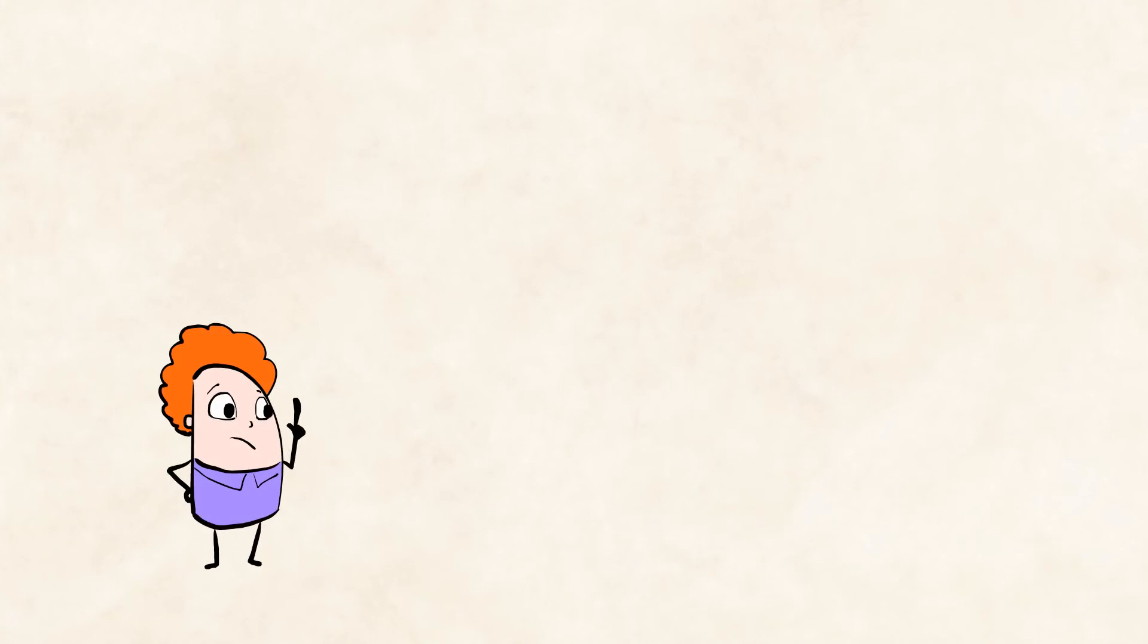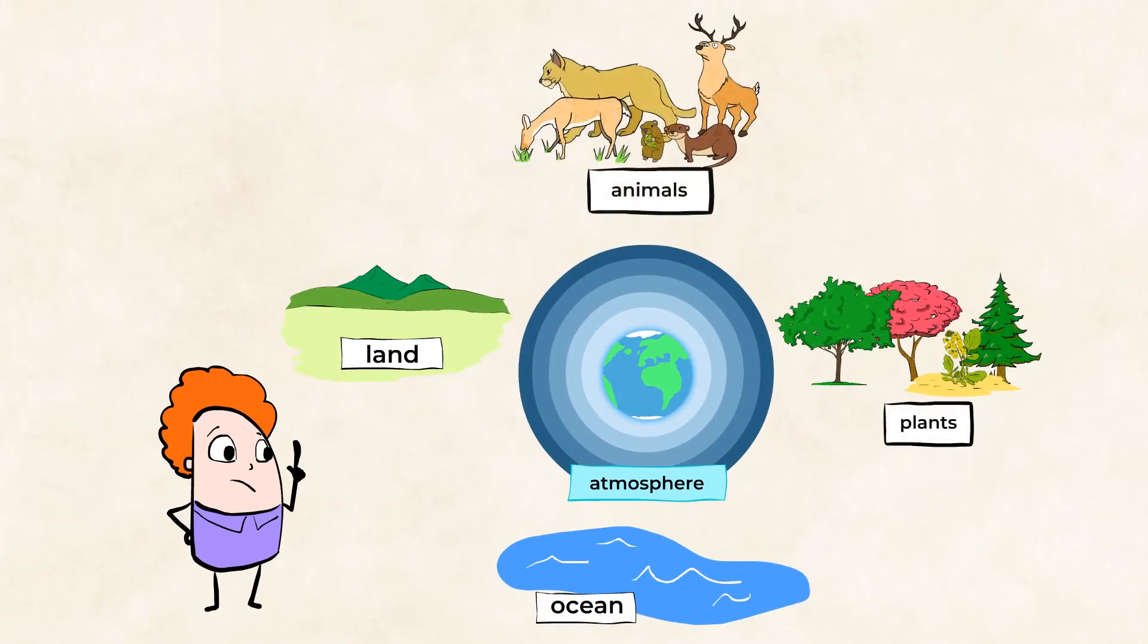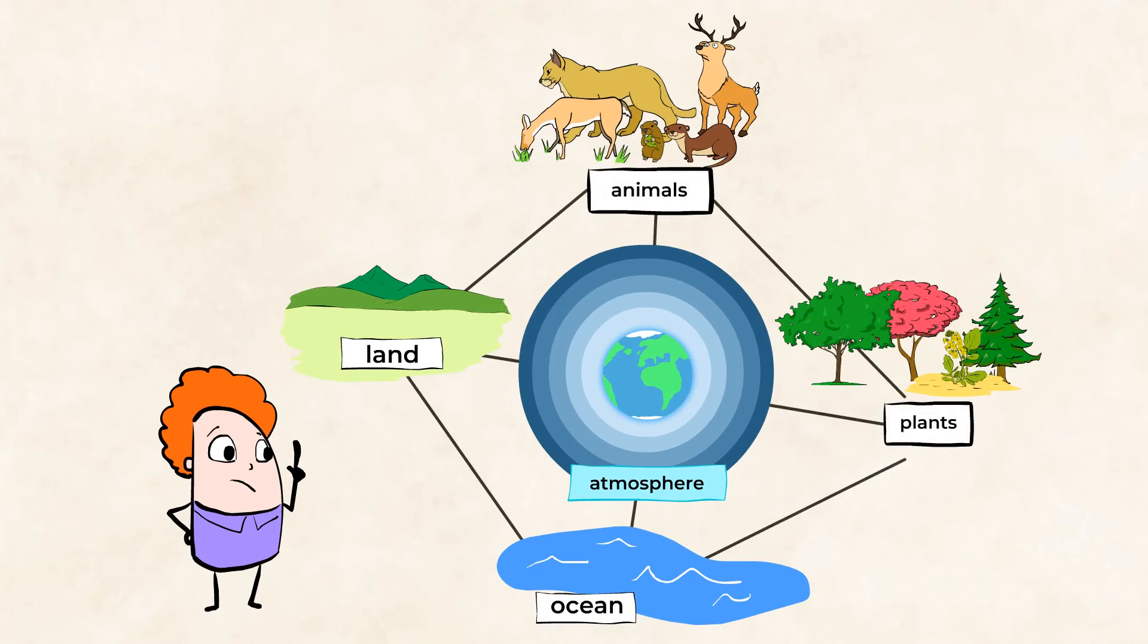And this is really important to understand, because the entire world, oceans, land, our atmosphere, all plant and animal life, are connected to one another. All of these things come together to give us our global climate, so we have one giant system working together.